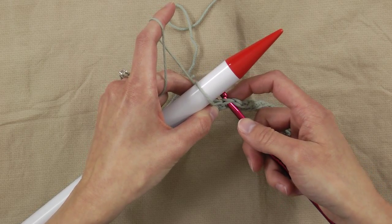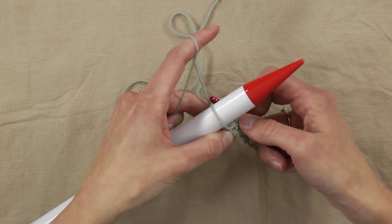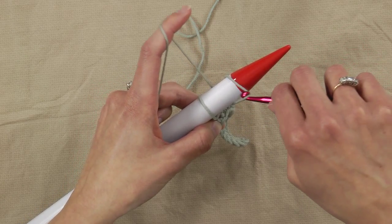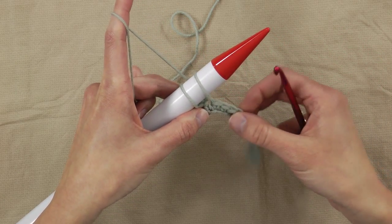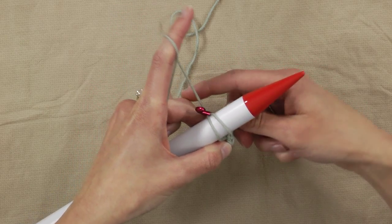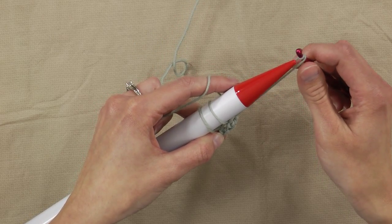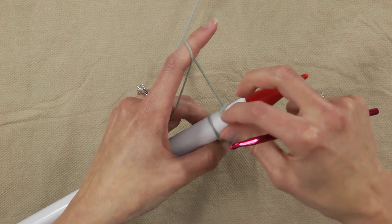I'll insert my hook in the next loop, the next stitch, grab the working yarn, pull up a loop big enough to slide over the needle, and slide it on. I'll do this all the way across. The number of stitches is the same number as the number of loops that you want to have on your knitting needle at the end of the row.